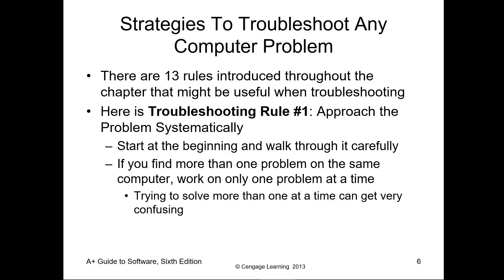Let's go a bit more in depth on strategies for troubleshooting any problem. Normally there are 13 rules — these are more general, not specific, and may help when troubleshooting. Rule one: approach the problem systematically. Break things down into manageable chunks so you do not waste time going in circles. Start at the beginning and walk through it carefully. If you find more than one problem on the same computer, work on only one problem at a time, because trying to solve multiple problems simultaneously can get very confusing and lead to greater issues.